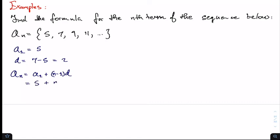Simplifying this gives us 5 plus 2n minus 2, which is equal to 2n plus 3.